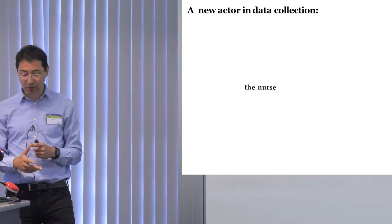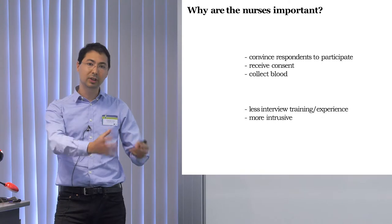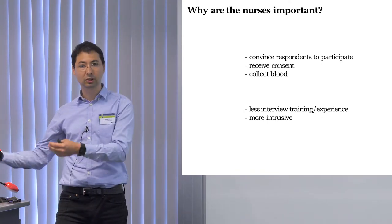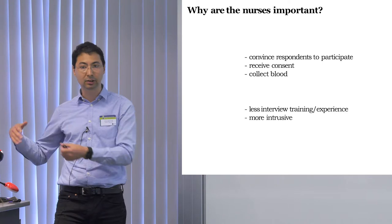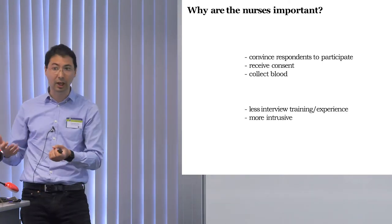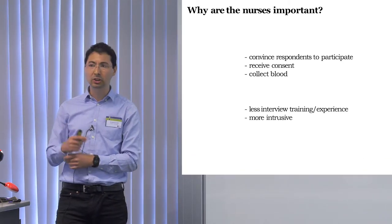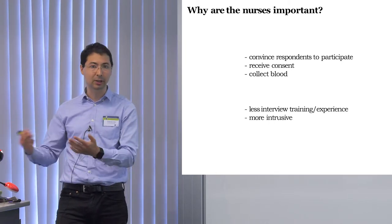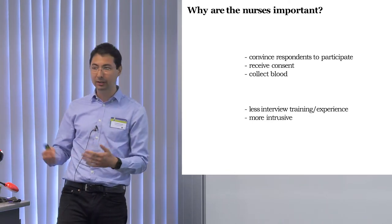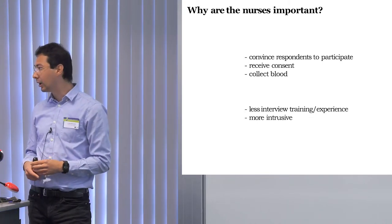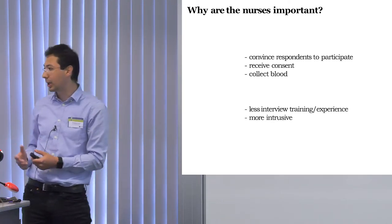Nurses have to do a couple of things. First, they have to convince a participant to take part. Usually there's a main survey, and then a few months later the nurse goes and collects biological data. Sometimes the nurse actually has to convince people to participate, which is very new for them — most nurses sit in an office and people come to them desperate for help. It's not their job to go to people's homes and convince them to give blood. That's a very different task from what they were initially trained to do, so they need training for this new task.